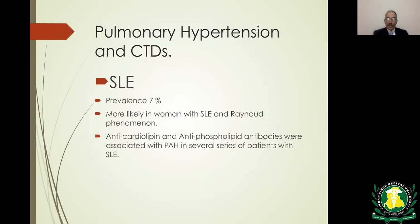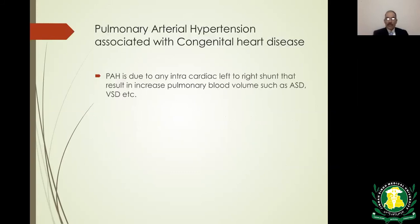In SLE, prevalence is about 7 percent, more likely in women with SLE who have Raynaud's phenomenon and anticardiolipin and antiphospholipid antibodies. PAH associated with congenital heart disease occurs when any congenital defect leading to left-to-right shunt increases pulmonary blood flow, eventually leading to pulmonary hypertension.